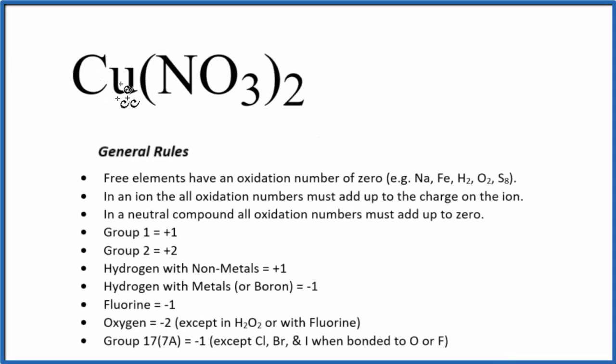To find the oxidation number on each element here in copper 2 nitrate, that's Cu(NO₃)₂, we'll use these general rules here. It's a little bit of a tricky one.